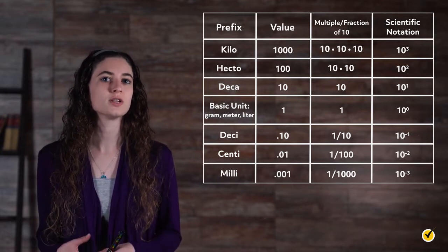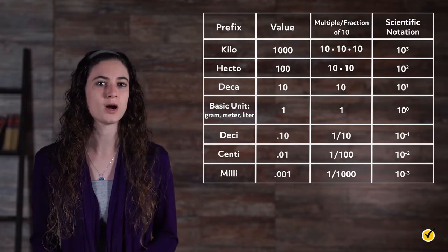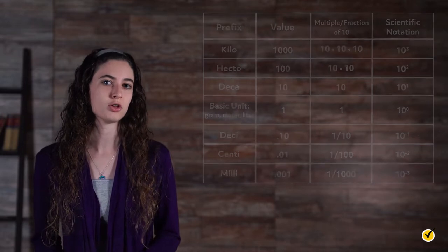Once the order is known, you can easily convert between base units by moving the decimal point either to the right, for a larger unit, or to the left, for a smaller unit. Let's look at a few examples.